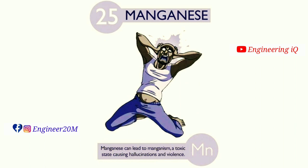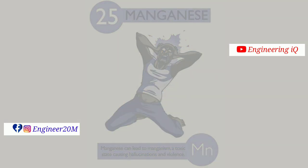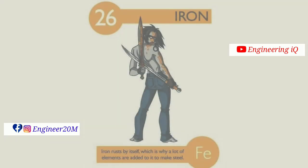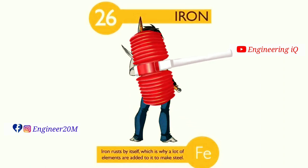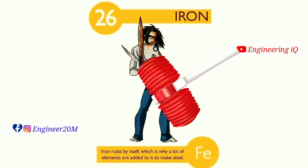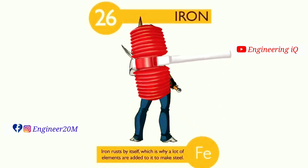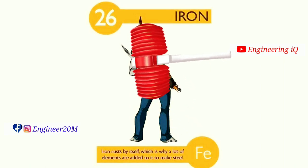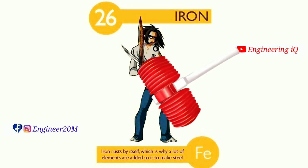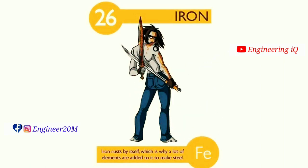Manganese toxicity can cause hallucinations and violations. It is denoted by Mn. Iron: atomic number of iron is 26. Iron rusts by itself, which is why many elements are added to it to make steel. It is denoted by Fe.